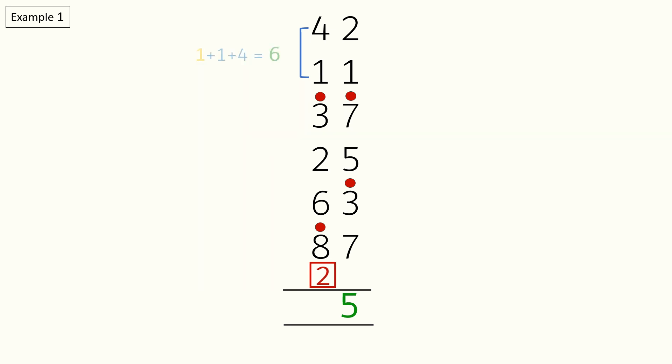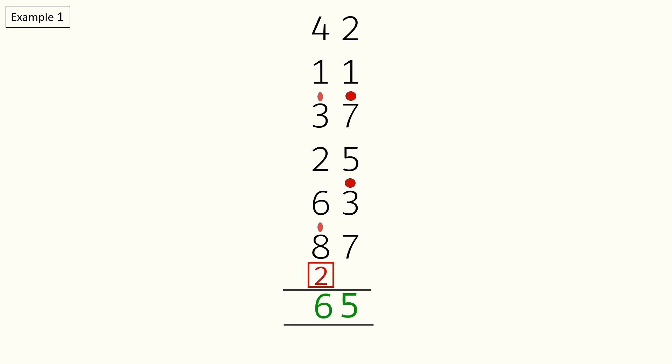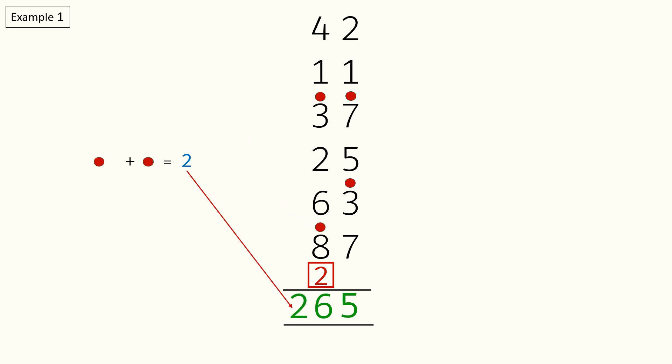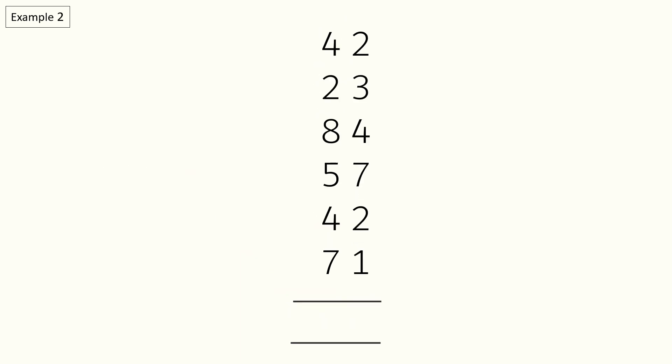Moving on: carry over 1 plus 1 plus 4 is equal to 6. Since we do not have any more digits to add, we will write 6 in the tens answer section. Next we will count the number of dots — since there are 2 dots, we will write 2 in the answer section. So the final answer is 265.